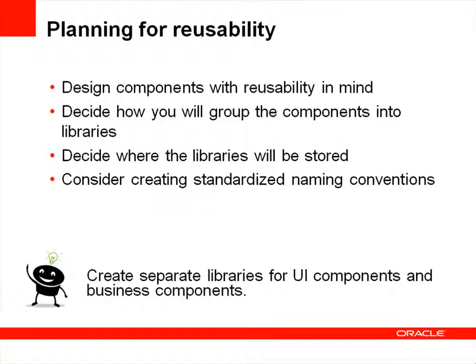Decide how to group the components into libraries that meet your organizational needs, and decide where the libraries will be stored. As a general rule, you should create separate libraries for UI components and business components. Also consider creating standardized naming conventions to make it easier for creators and consumers to work with your libraries.